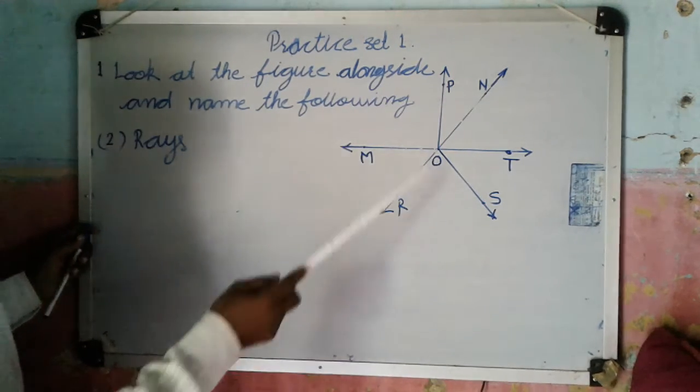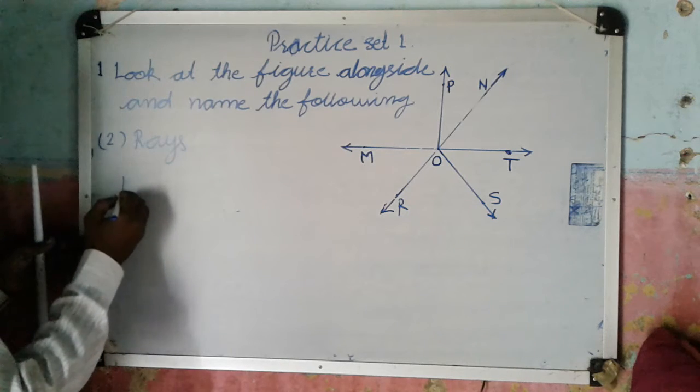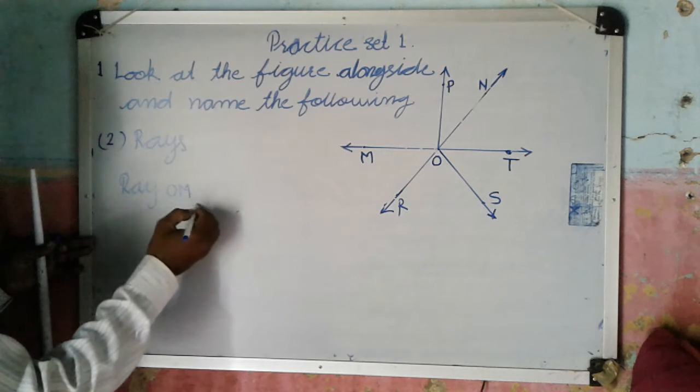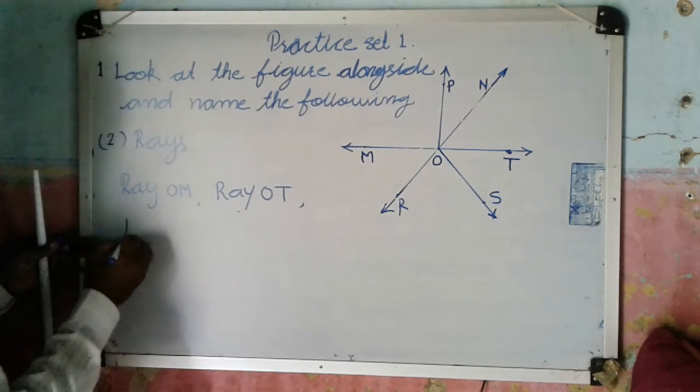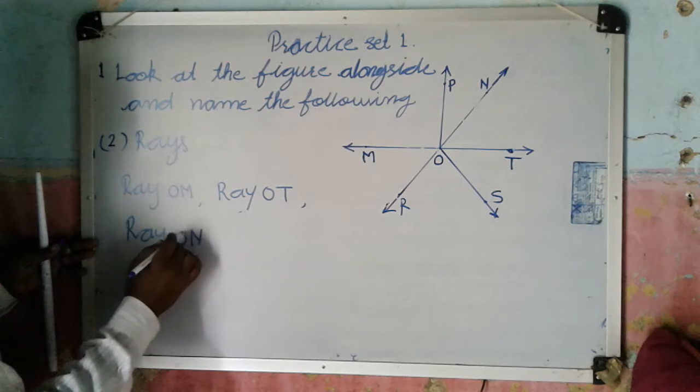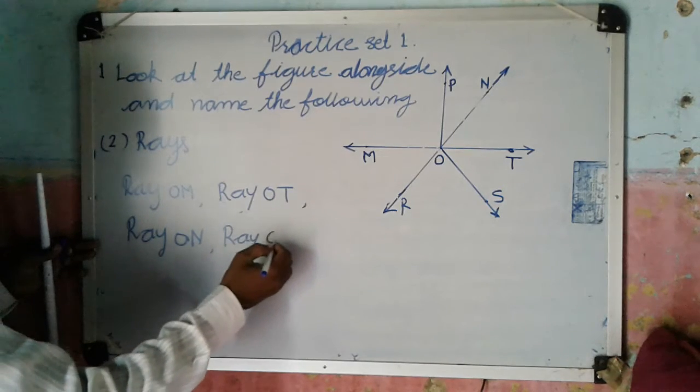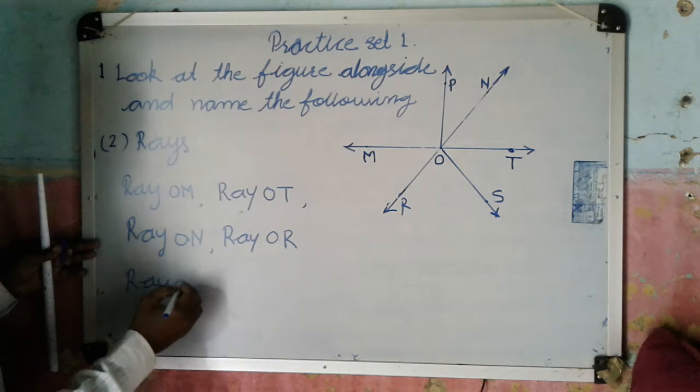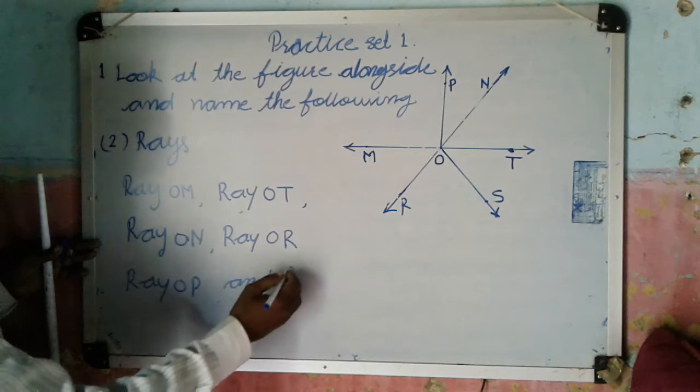These are rays which are starting from point O, so we can write names here: ray OM, ray OT, ray OR, ray OM, ray OT, ray OP.